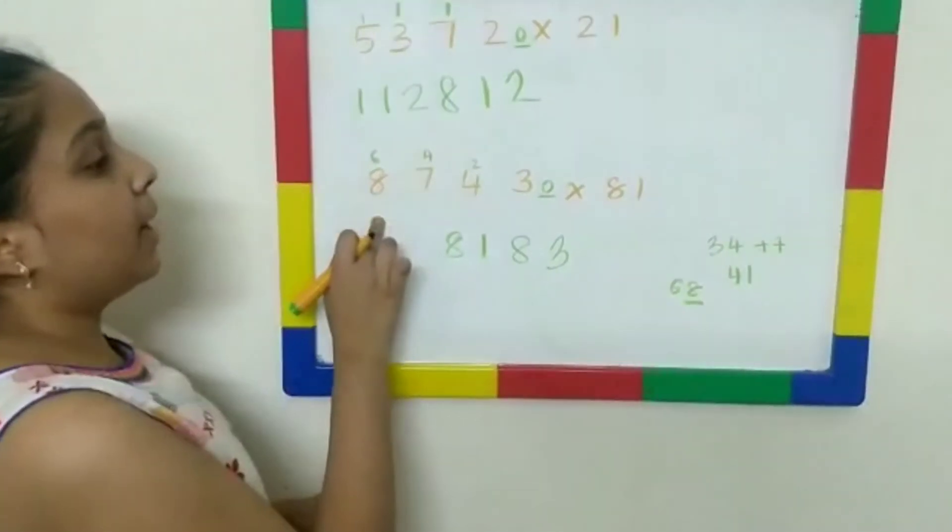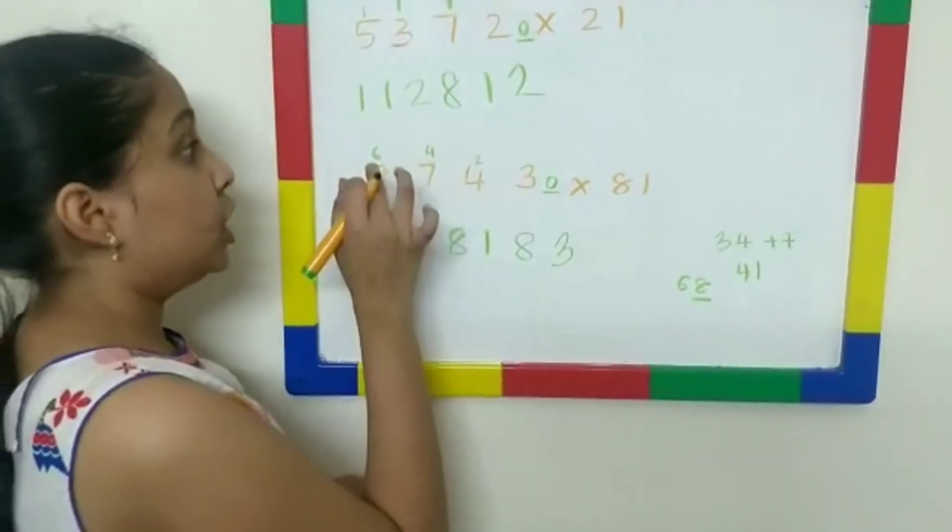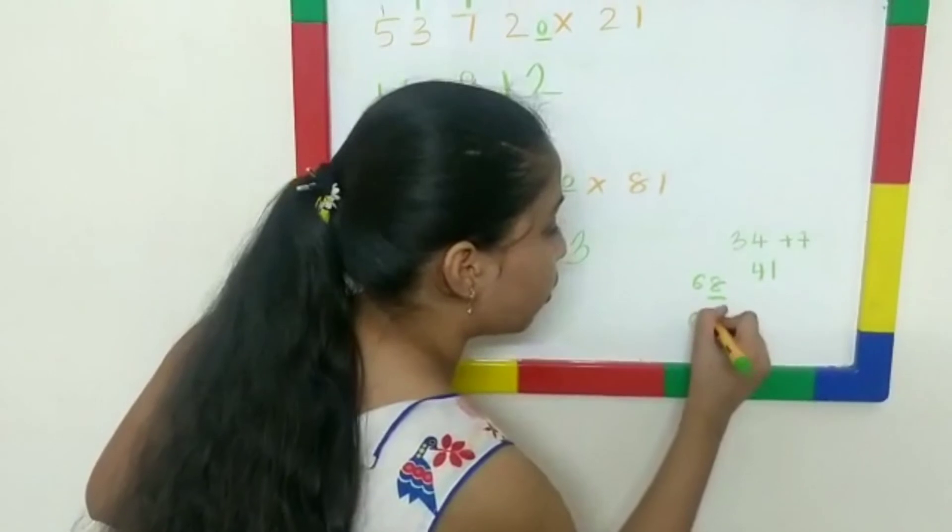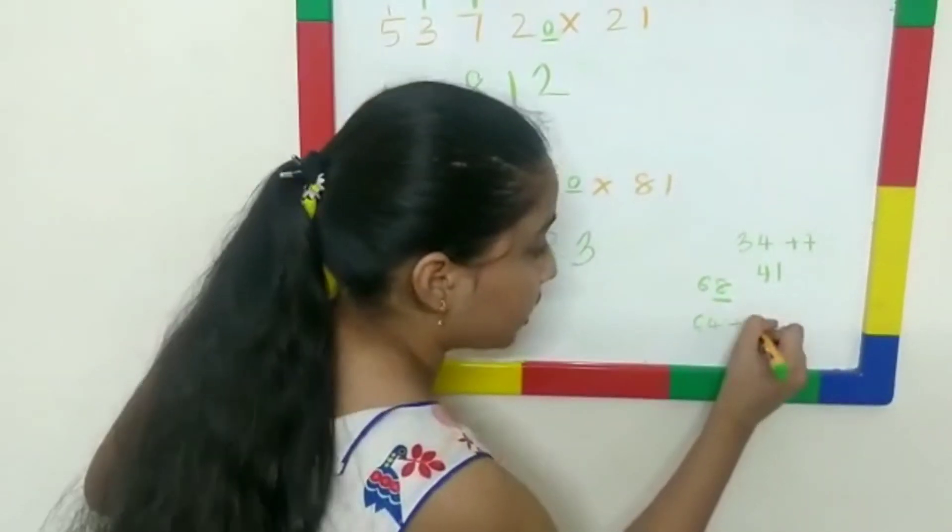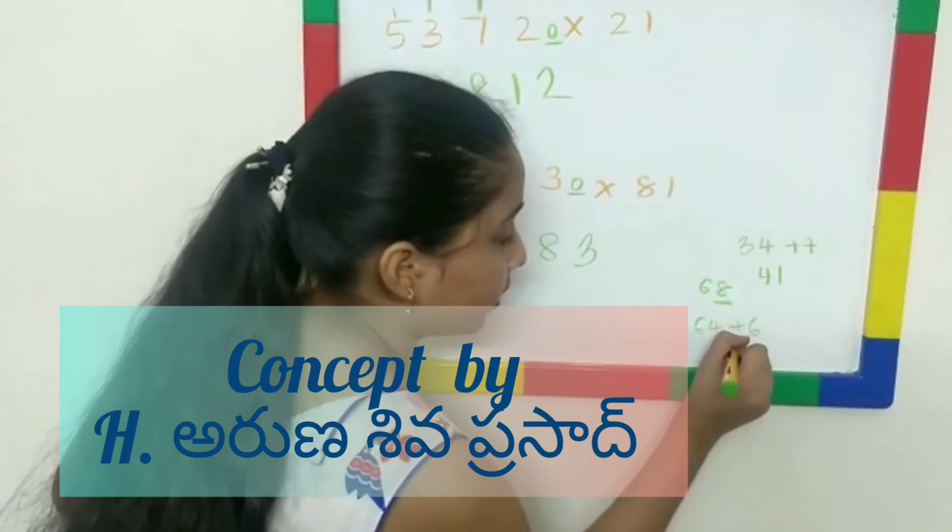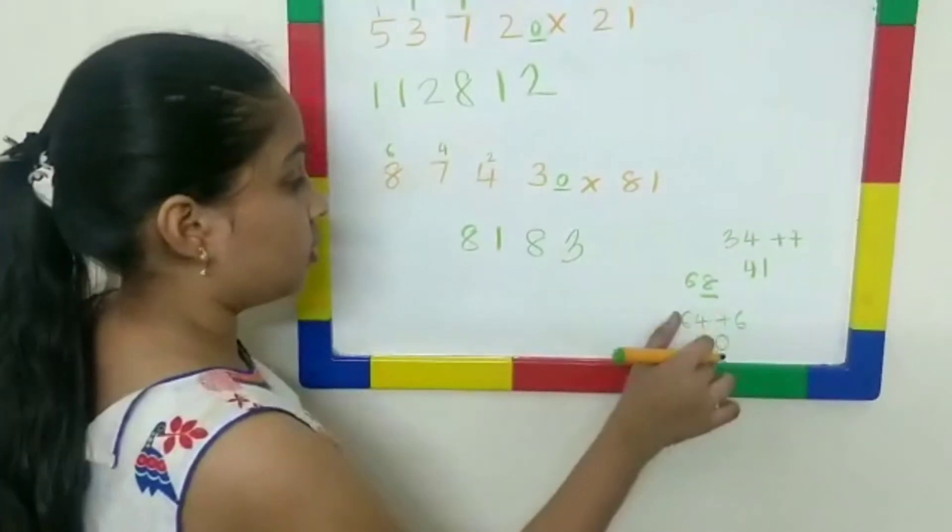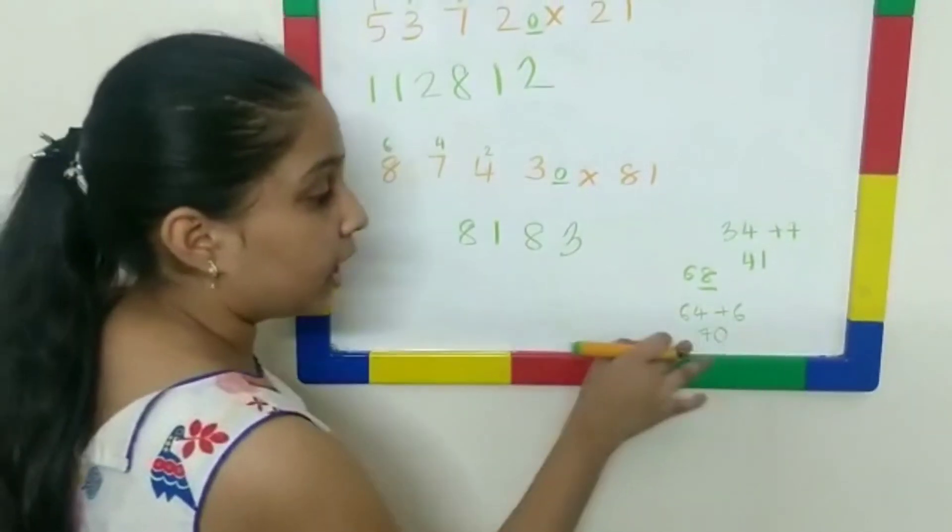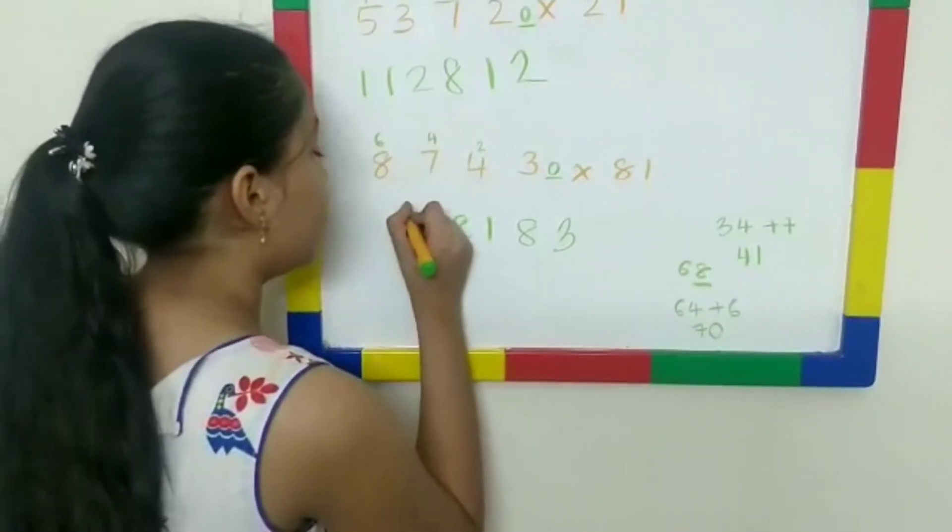8 multiplied by 8 gives 64. 64 plus 6. We'll write it down. It's big. 64 plus 6 gives me 70. 7, 0. 0 on the bottom. Both of them. Now, there's no number in the end. So, we'll write both of them over here only. 70.